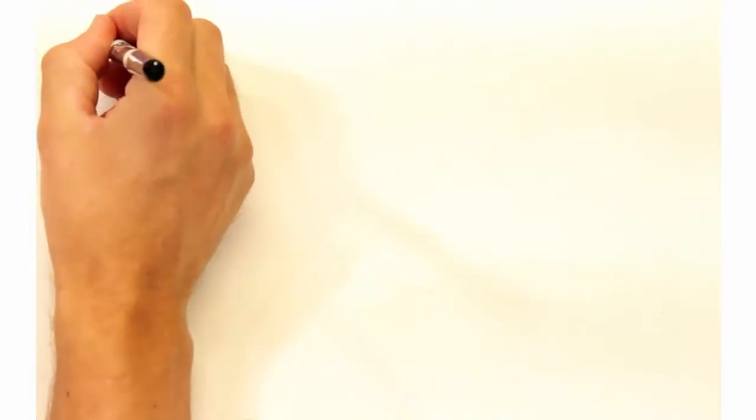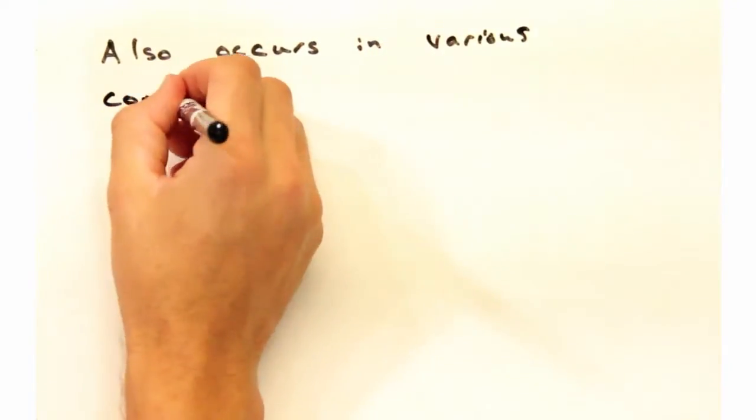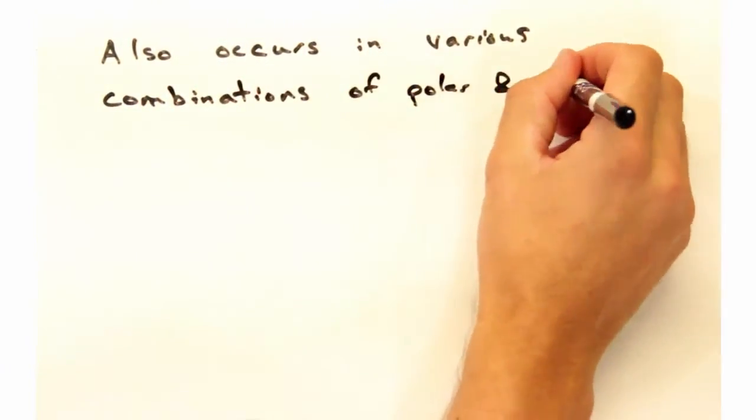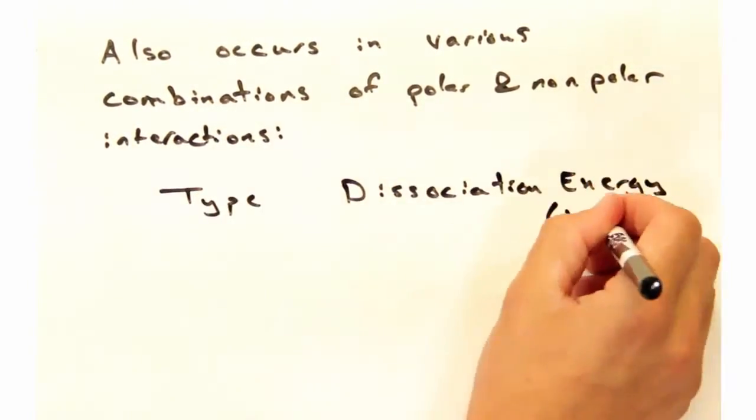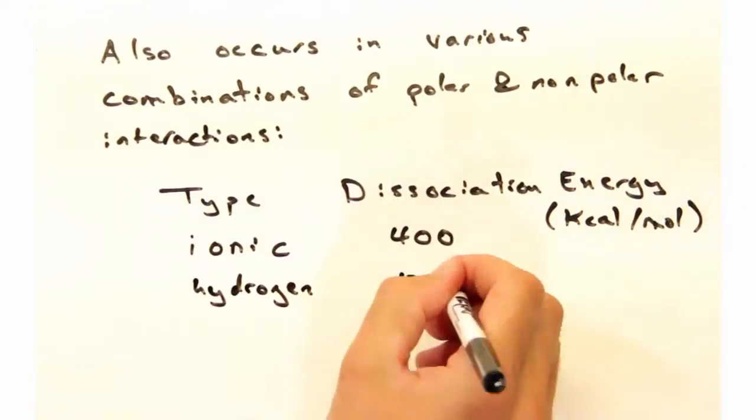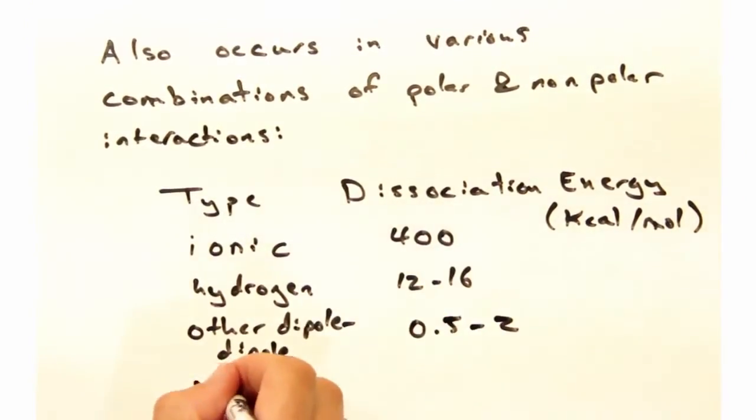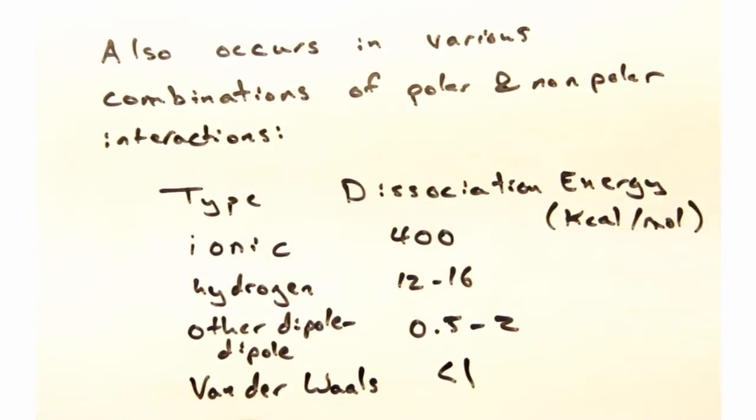Right. These interactions also exist in various combinations of polar and non-polar molecules. Oh, okay. Hold on. I'm getting a little confused. Let's put everything in a table. That's much better. We won't bore you with going through every interaction here, but it would be good to keep this table in mind.